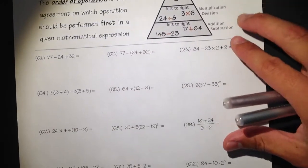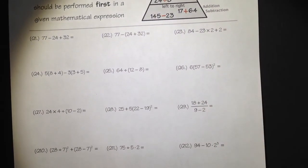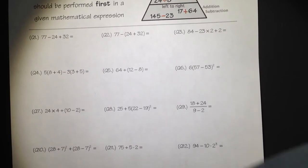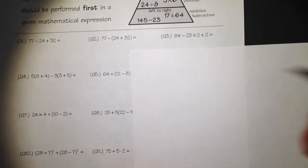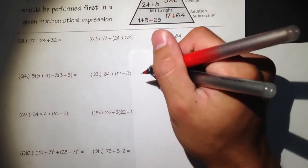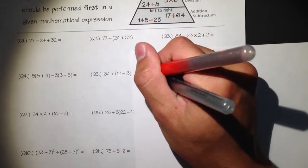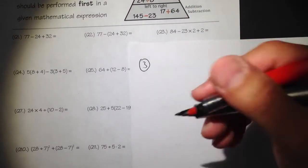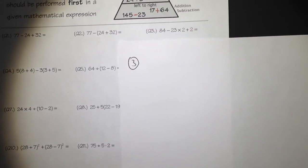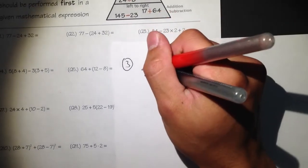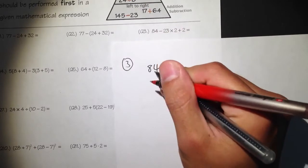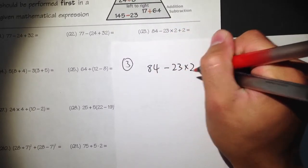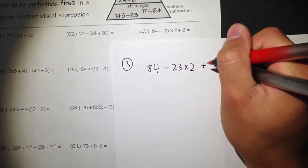Let me work out the multiple examples right here, and I'll also show you how to do this on a calculator. You can also check out the PDF file — it's going to be in the description of this video. For the first question, I have 84 minus 23 times 2 plus 2.